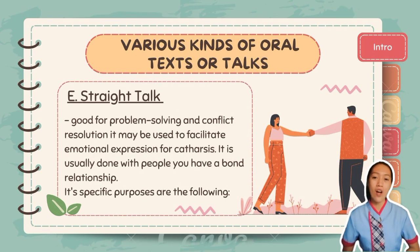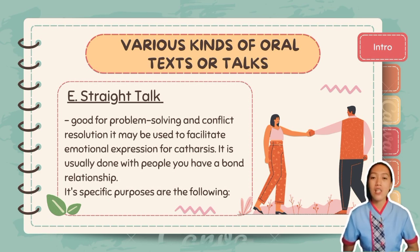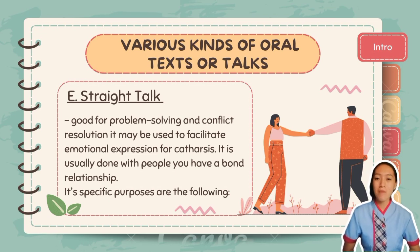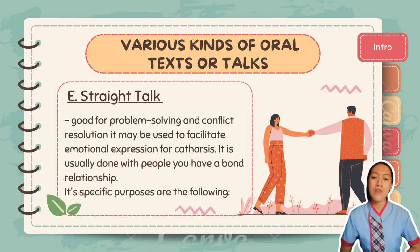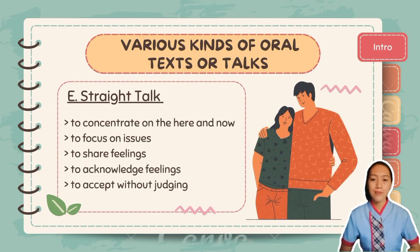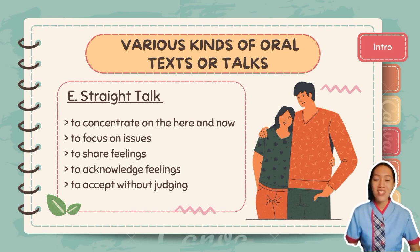The last kind of oral text is straight talk. Straight talk is good for problem-solving and conflict resolution because it may be used to facilitate emotional expression for catharsis — the act of purging, cleansing, and releasing ideas and emotions. It is a type of communication that uses simple and direct means to convey a message, usually done with people you have a bond with. For instance, if you ask your sister why she's angry, you simply ask for the reason and try to understand without criticizing or judging. Its purposes include concentrating on the here and now, focusing on issues, sharing feelings, acknowledging feelings, and accepting without judging. To be a good straight talker, you need to be a good listener and open-minded.